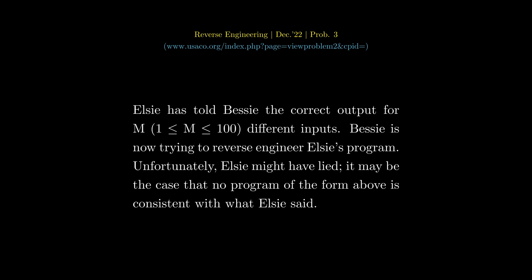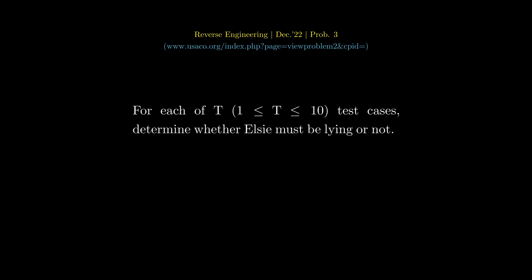Elsie has told Bessie the correct output for m different inputs. Bessie is now trying to reverse engineer Elsie's program. Unfortunately, Elsie might have lied — it may be the case that no program of the form above is consistent with what Elsie said. For each of t test cases, determine whether Elsie must be lying or not.